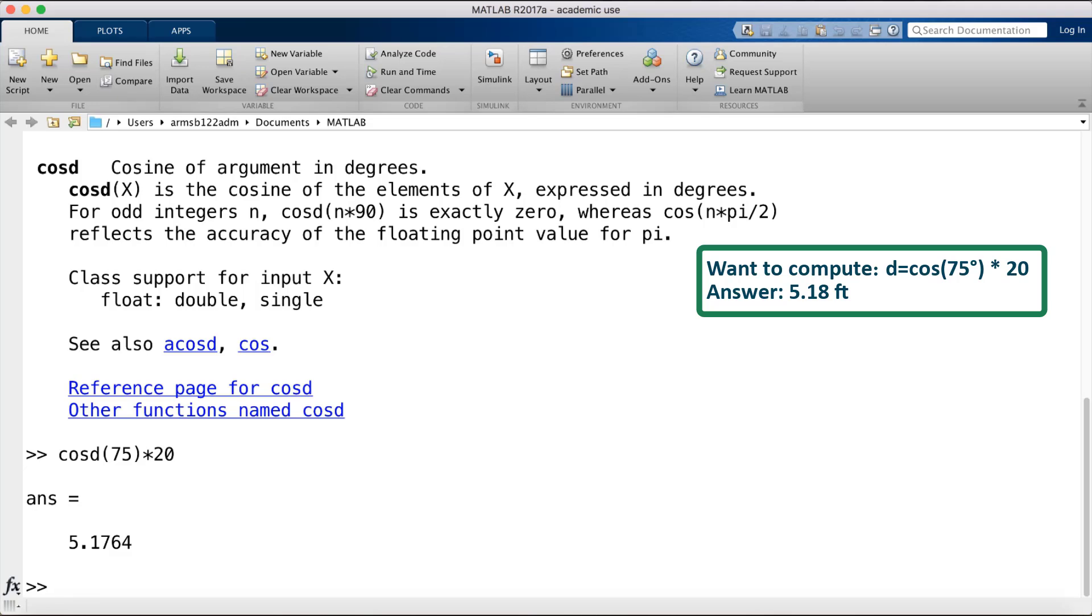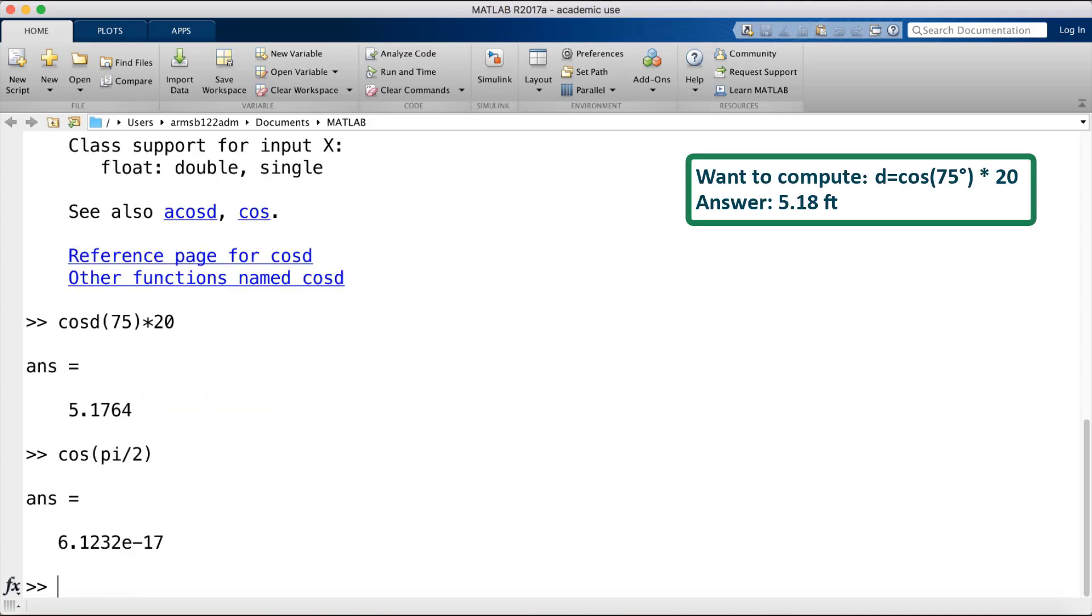If I read the rest of the help for cosd, there's a mention there about cos n times pi over 2 not giving a value 0. Really? Let's try that. Cos pi over 2. Push enter.